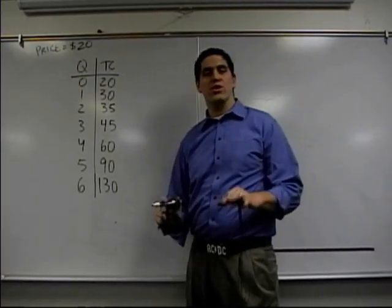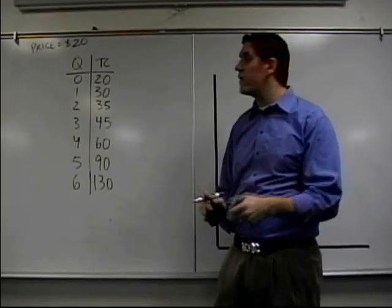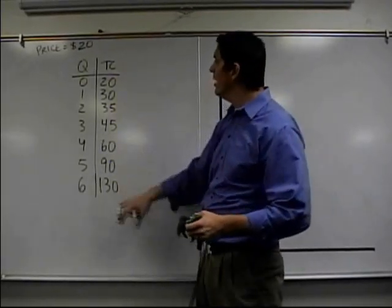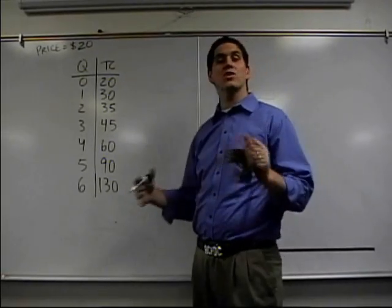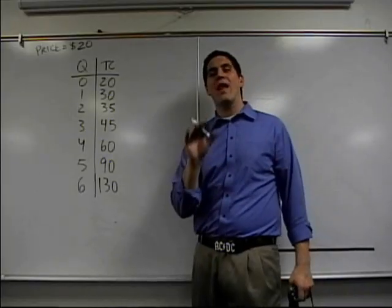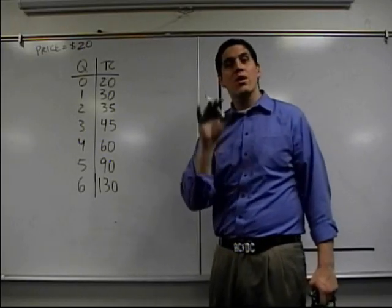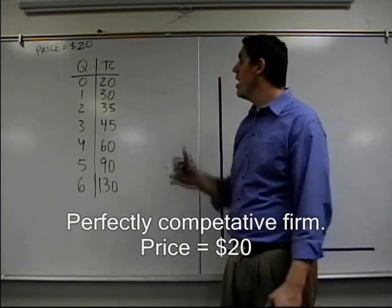I want you to take a look up here, a classic question you're going to see on the multiple choice section, or even if your response is right here. They're going to give you the quantity, they're going to give you the total cost, and they're going to ask you a bunch of questions. Today, I'm going to ask you to figure out how much you should produce. And we're going to assume this is a perfectly competitive firm.